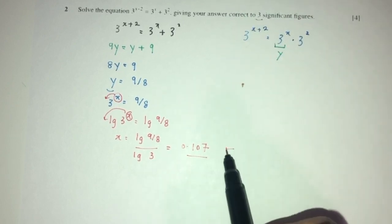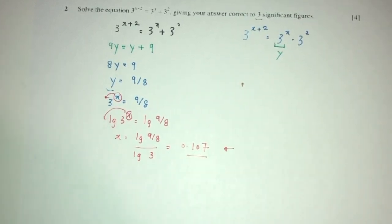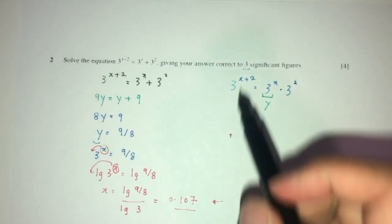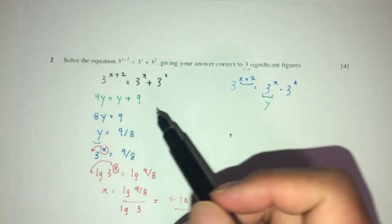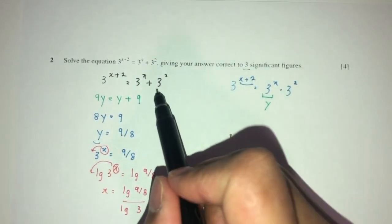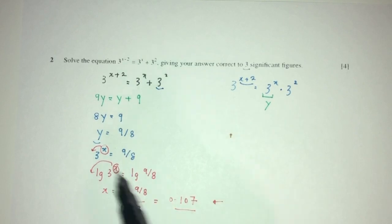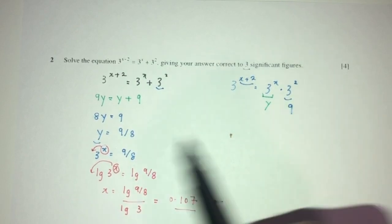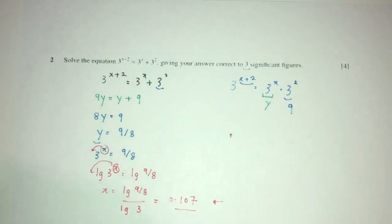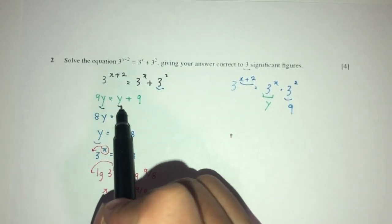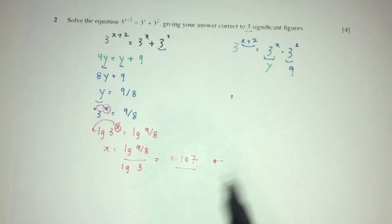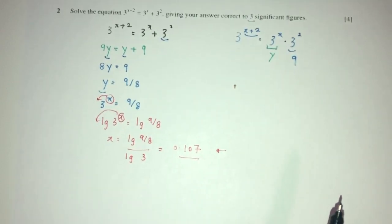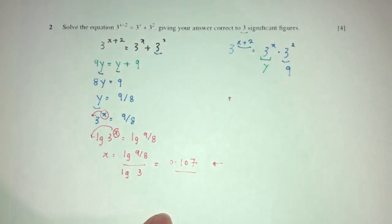The main point here is we have to understand the laws of indices — we can break this down. Then simplify: 3 squared is just 9. Send the same variable to one side, and then find the value of x step by step, as you can see. That will be your question number 2.